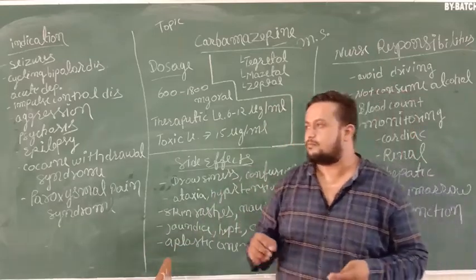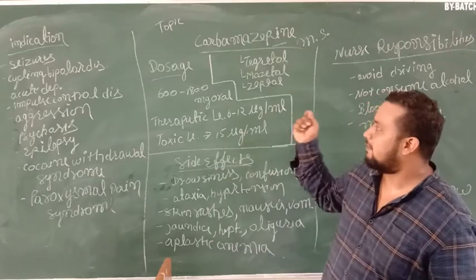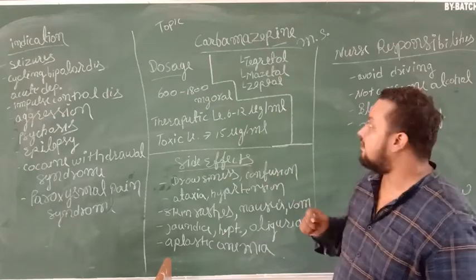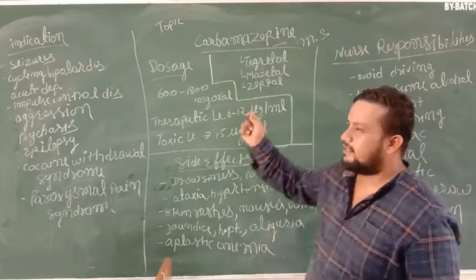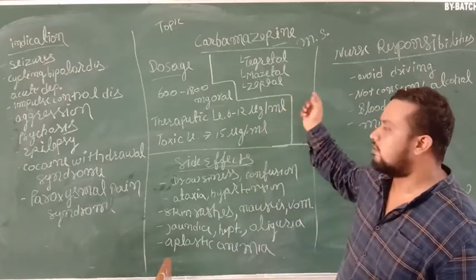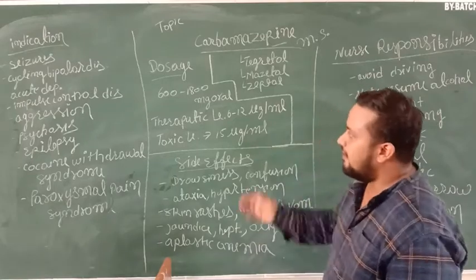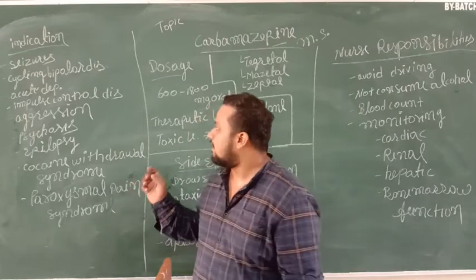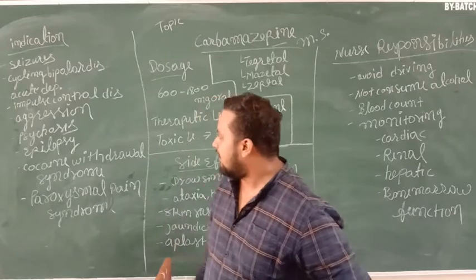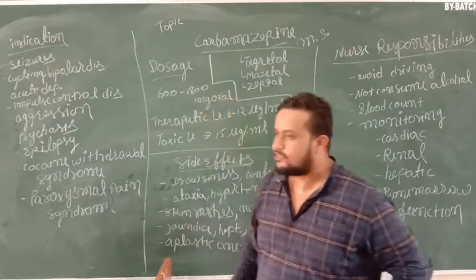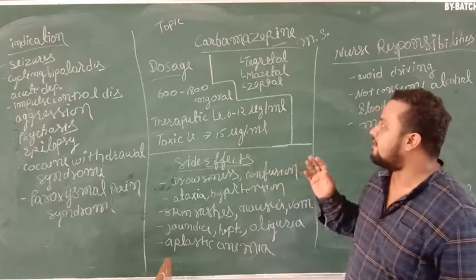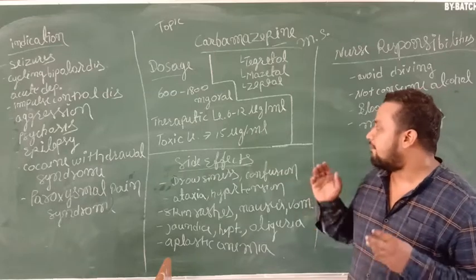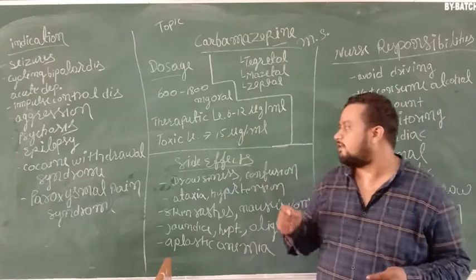So these are the nurse's responsibility for patient receiving Carbamazepine mood stabilizer. Now we again shortlist Carbamazepine. First of all, Carbamazepine is an anticonvulsant drug and mood stabilizer drug. In market available in this brand name: Tegretol, Magitol, these are the names. Basically it has indications of seizures, cyclic bipolar disorder, acute depression, impulsive control disorder, aggression, psychosis, epilepsy, cocaine withdrawal symptoms, trigeminal pain syndrome. Then dose 600 to 1800 mg orally. Therapeutic level is 6 mcg per ml. Toxic level is 15 mcg per ml.